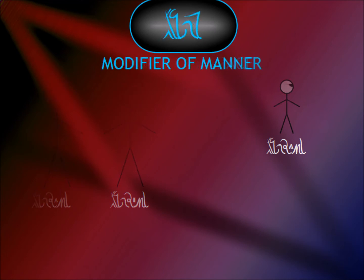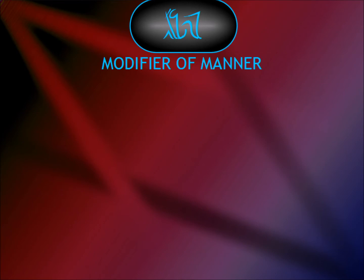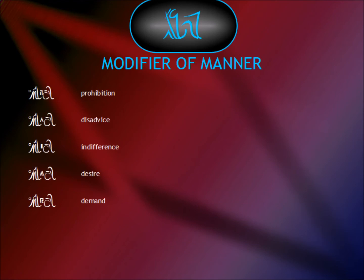'Iram' is the modifier of manner, which answers the question 'how'. Our familiar introduction phrase contains 'iramdiira', which means 'desirably'. The construction of 'iramdi' is a useful modifier which serves as the equivalent of imperatives. 'Diara' means prohibition, and so the cluster 'iramdiara' means under no circumstance should the action take place.